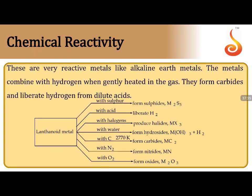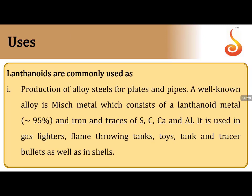Chemical reactivity of lanthanides is similar to alkaline earth metals, but the reaction products resemble those of aluminium. They easily displace hydrogen from dilute acids. Reactions: with sulfur they form M₂S₃; with halogens they form MX₃; with dilute acids they form MX₃ and release H₂; with water they release hydrogen gas; with nitrogen they form MN; with oxygen they form M₂O₃. Product formulae resemble aluminium, but reactivities are similar to alkaline earth metals.